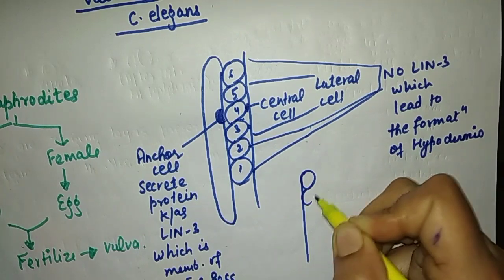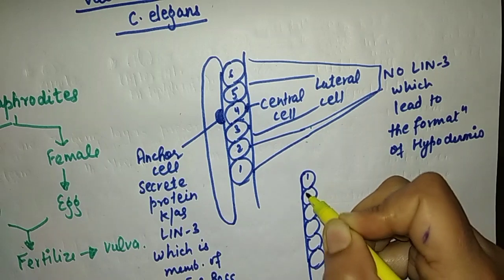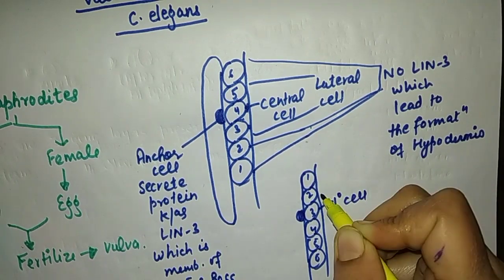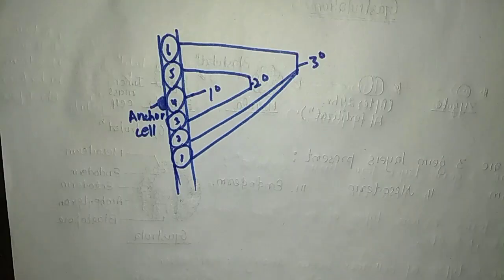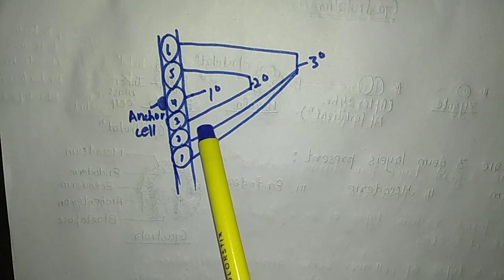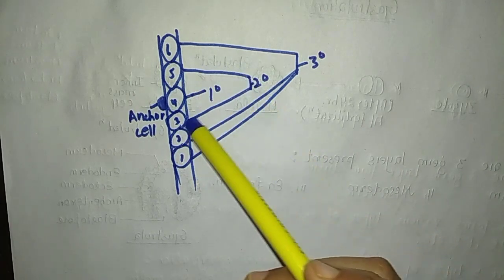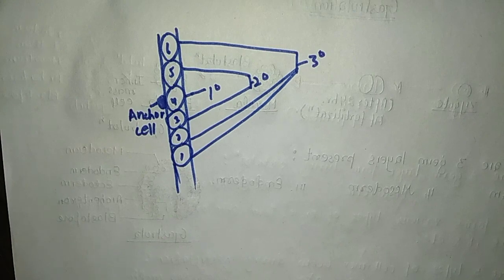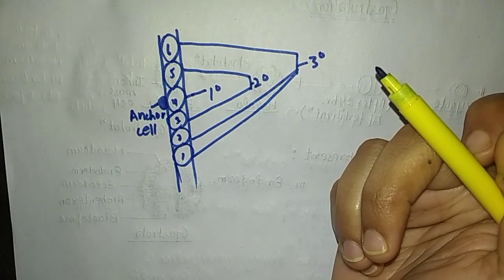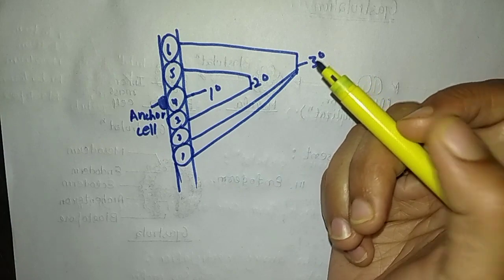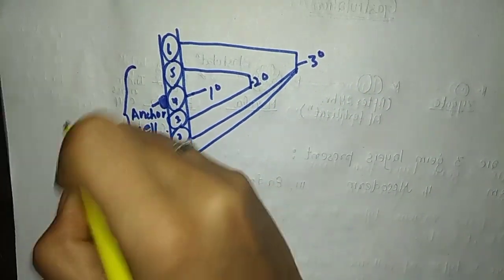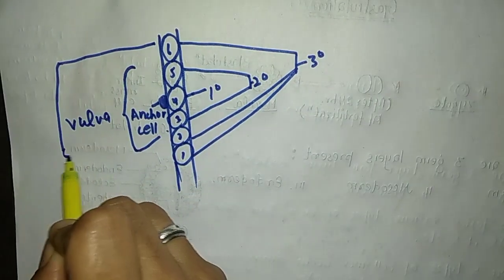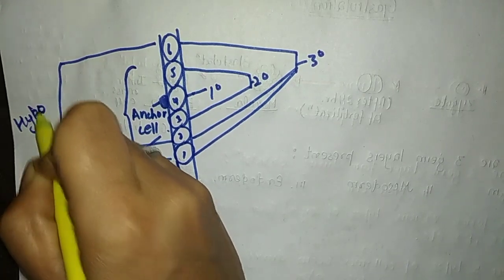Here are the six vulva precursor cells: 1, 2, 3, 4, 5, 6. With the anchor cell present, the cell closest to the anchor cell is known as the primary cell. The adjacent cells are known as secondary cells. The remaining cells are known as tertiary cells. The cells that receive lin-3 protein form the vulva, and the remaining three tertiary cells are going to form hypodermis.